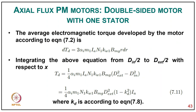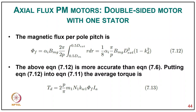The average electromagnetic torque developed by the motor is given by dTd = 2·αi·m1·Ia·N1·kw1·Bmg·r·dr. Integrating from D_in/2 to D_ext/2: Td = (1/4)·αi·m1·Ia·N1·kw1·Bmg·(D_ext² − D_in²) = (1/4)·αi·m1·N1·kw1·Bmg·D_ext²·(1 − kd²)·Ia. The magnetic flux per pole is φf = (αi·Bmg·2π/2p)·∫(0.5·D_in to 0.5·D_ext) r·dr = (1/8)·αi·(π/p)·Bmg·D_ext²·(1 − kd²).